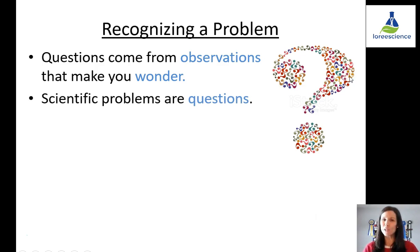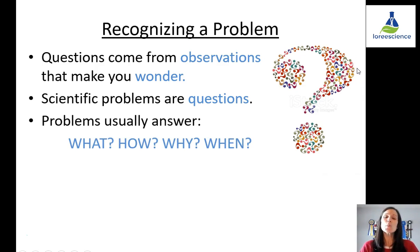Scientific problems are just questions. So when we talk about a scientific problem, all we're meaning is a question that can be asked or is asked. So problems in terms of science usually answer the questions: What? What happens? Or how? How will that be different if I do this? Why does something happen? Or when will this happen? When will something occur?